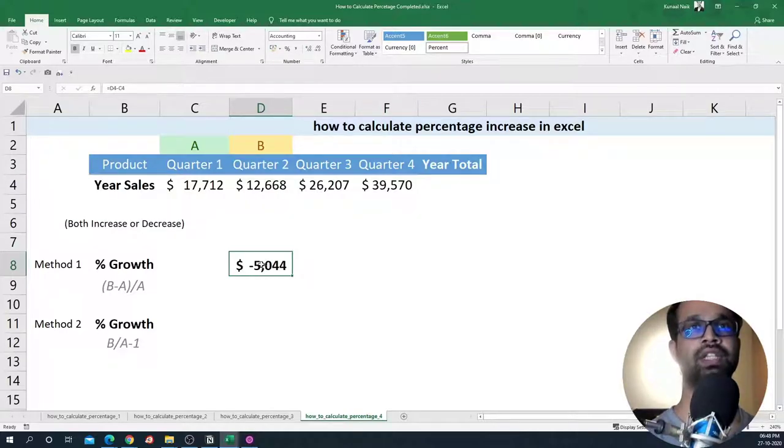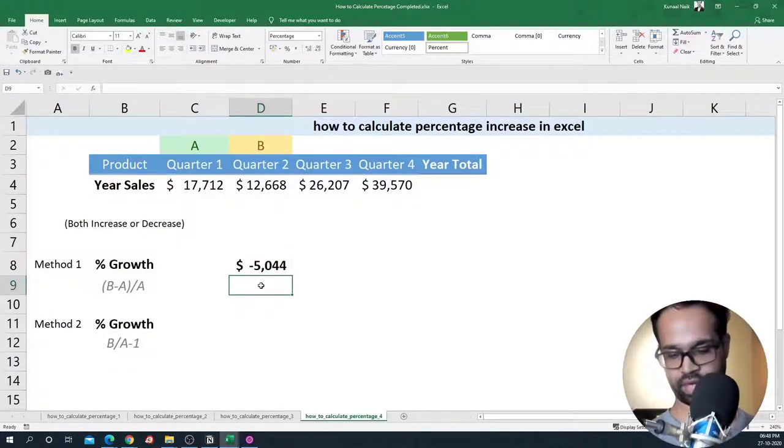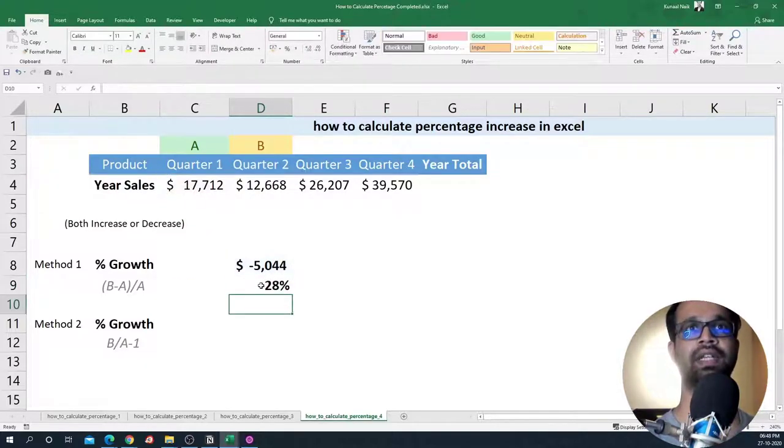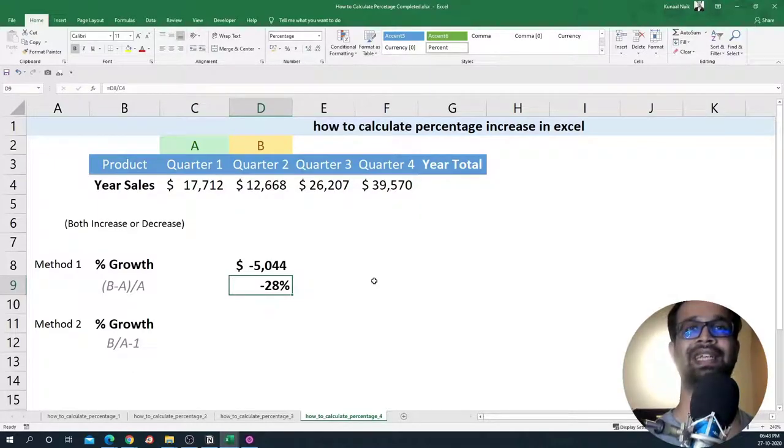Now what percentage of minus five thousand is of 17k here? That's the percentage that we need to calculate and that will give us the percentage decrease from quarter one to quarter two. So if I have to write it, it will be this divided by the 17k and I get a minus 28 percent decrease.